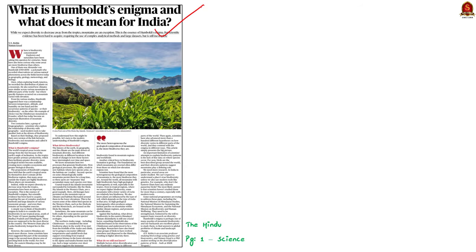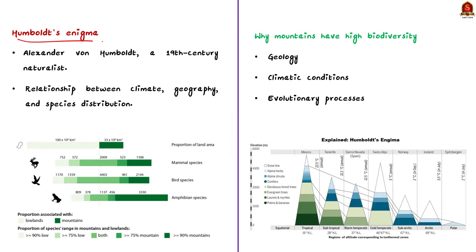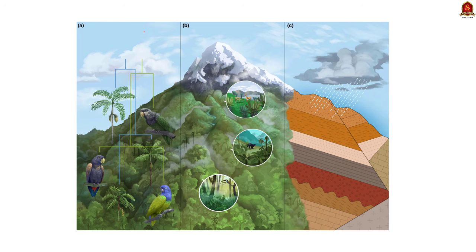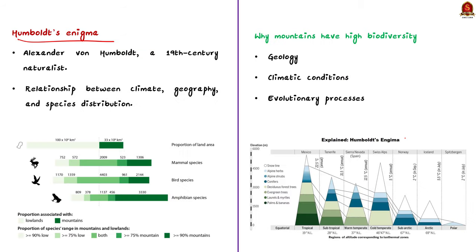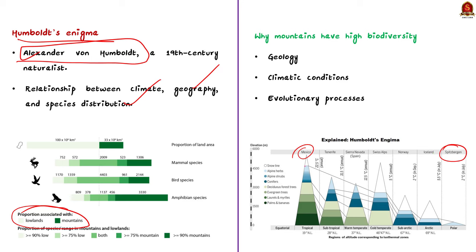This article talks about the concept of Humboldt's Enigma, which is a modern interpretation of the relationship between biodiversity and mountains based on the observations of Alexander von Humboldt. Humboldt's Enigma is a term used to describe the puzzle of why some mountain regions, especially in the tropics, have exponentially high biodiversity, contrary to the expected decrease in diversity away from the equator. It is named after Alexander von Humboldt, a 19th-century naturalist who explored the relationship between climate, geography, and species distribution.